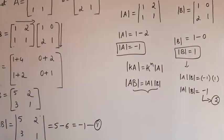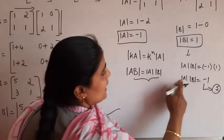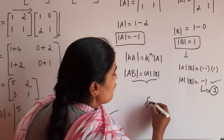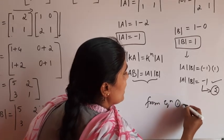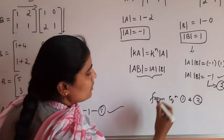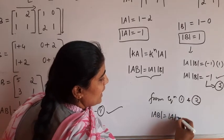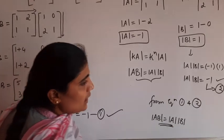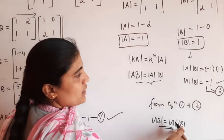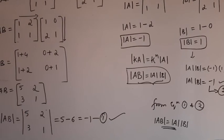From equation 1 and equation 2 we observe that determinant of AB equals minus 1 and determinant A times determinant B also equals minus 1. Therefore, determinant AB equals determinant A times determinant B. This is the proof of that important result.